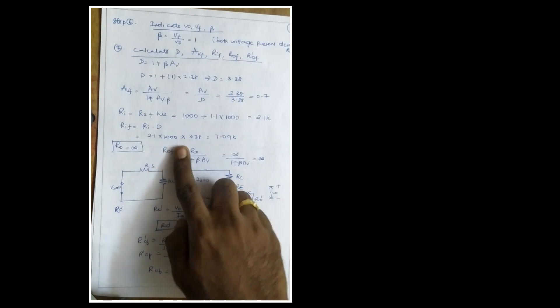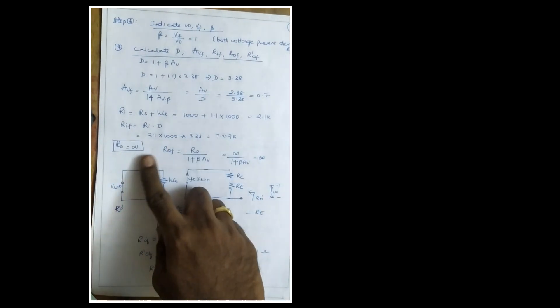Step six: indicate V_naught, Vf and find beta. Beta = Vf / V_naught = 1. Step seven: calculate desensitivity D and feedback parameters. D = 1 + beta·Av = 1 + 1 × 2.38 = 3.38. Avf = Av / D = 2.38 / 3.38 ≈ 0.7. Ri = Rs + hie = 1000 + 1100 = 2.1 kΩ. Rif = Ri × D = 2.1 kΩ × 3.38 ≈ 7.09 kΩ.